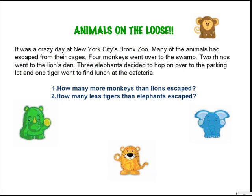Here is the problem. It was a crazy day at New York City's Bronx Zoo. Many of the animals had escaped from their cages. Four monkeys went over to the swamp. Two rhinos went to the lion's den. Three elephants decided to hop on over to the parking lot. And one tiger went to find lunch at the cafeteria. Now, how many more monkeys than lions escaped? And how many less tigers than elephants escaped?